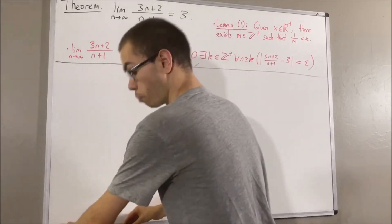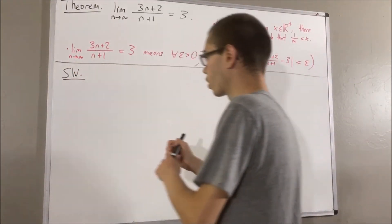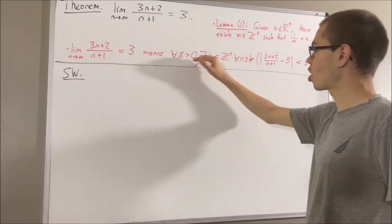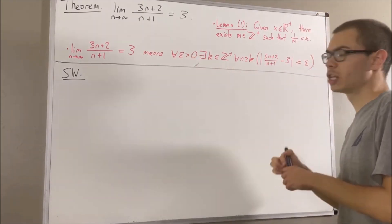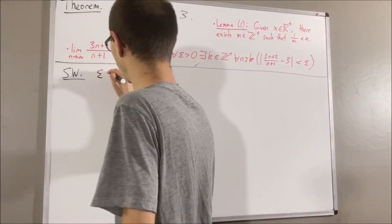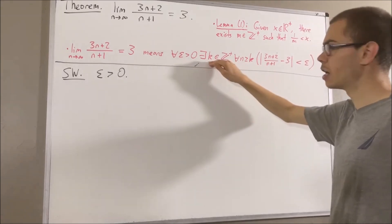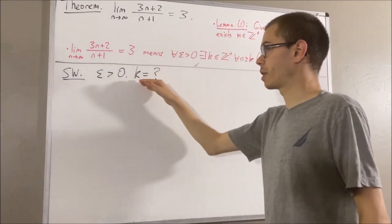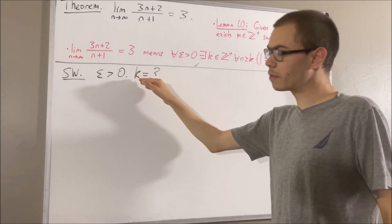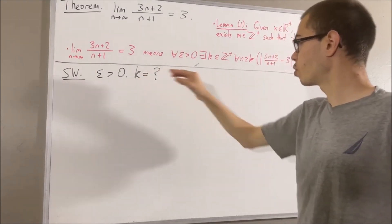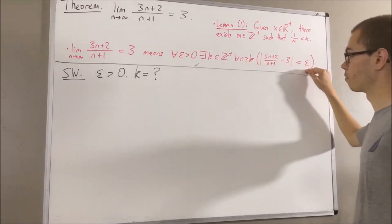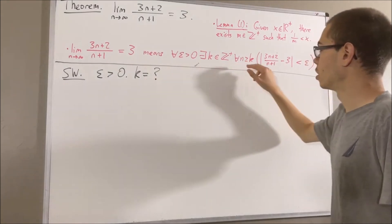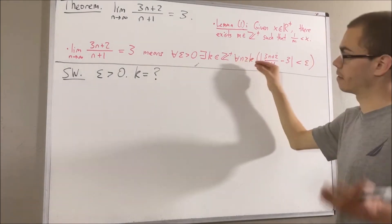Now before we get into the proof, let's start out with some scratch work. In the scratch work, we're trying to outline how we can show that this statement is true. And since we're trying to prove a statement about every epsilon greater than zero, let's work with an arbitrary epsilon greater than zero. From here, we want to find a positive integer k which makes this statement turn out true. We don't know what k is yet, but we're going to figure that out. Let's suppose that we've already figured out what k is and we'll proceed to show that this statement turns out true. And since we're trying to prove a statement about every positive integer greater than or equal to k, let's work with an arbitrary positive integer n greater than or equal to k.